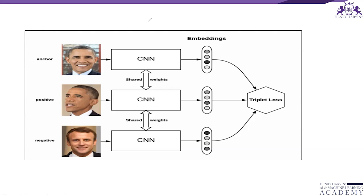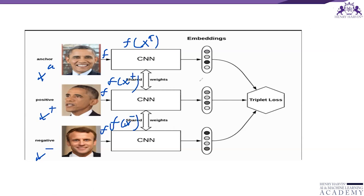Let XA be the anchor, X positive be the positive sample, and X negative be the negative sample. These three are passed through the same neural network F. We get F of XA, F of X positive, and F of X negative. D positive is the squared L2 norm distance between the positive sample and the anchor in feature space. The convolutional neural network extracts the three feature vectors, and then the distance between the positive sample and the anchor is computed as D positive.